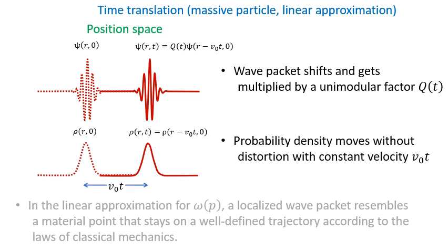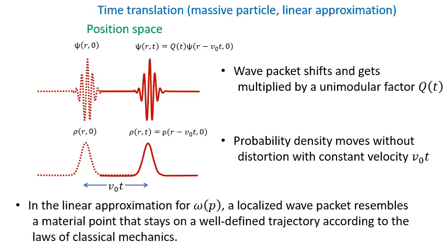But if we are interested in the probability density, which is a square of the modulus of the wave function, then the unimodular factor disappears. And all that happens is the shift of the wave packet as a whole with velocity V0. We can conclude that in the linear approximation for energy, localized wave packets remain localized and move along classical trajectories. As we already know, no faster than light movement is allowed in this case.